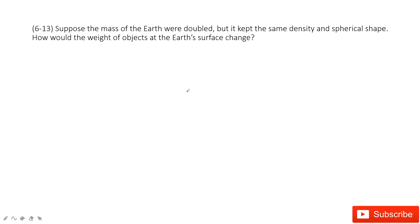Welcome to my channel. I'm Zhang Jingxu. Let's look at problem 13 in chapter 6. In this one, we consider the mass of the Earth is doubled, and the density is the same. We're asking how would the weight of objects at the Earth's surface change.